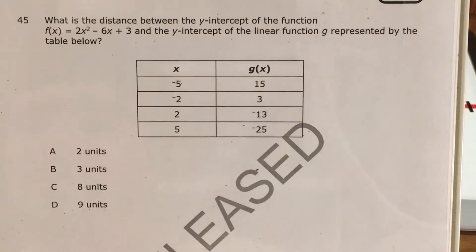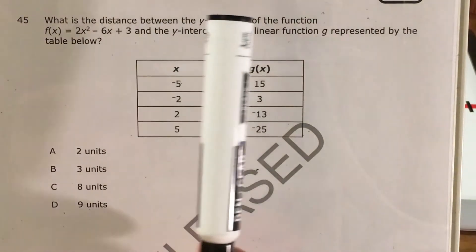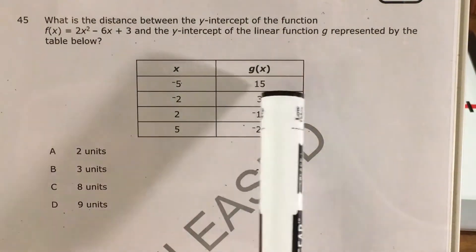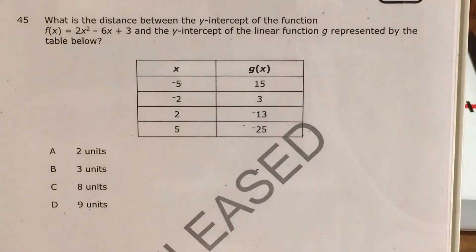What's up math scholars and math haters? This is Mr. W. Today we're going to tackle question 45 in the Math 1 questions that North Carolina released this past school year. The question asks us to find the distance between the y-intercept of the function f(x) = 2x² - 6x + 3 and the y-intercept of the linear function g represented by the table.